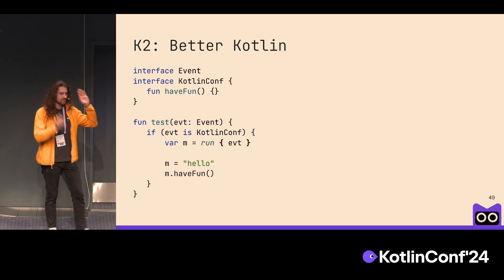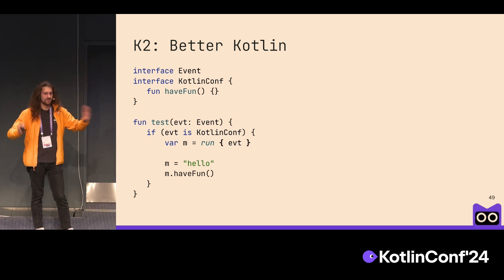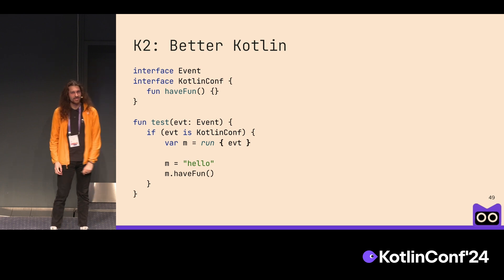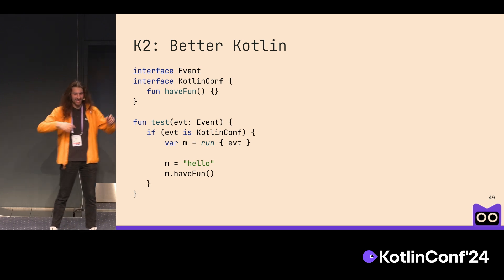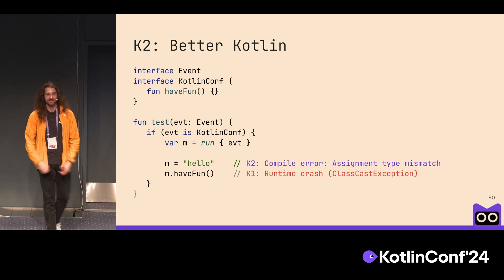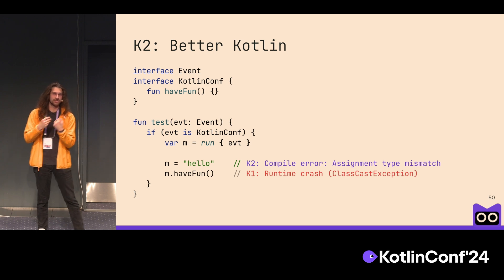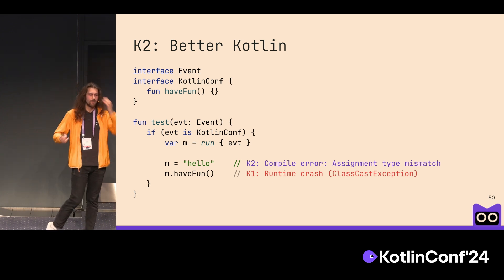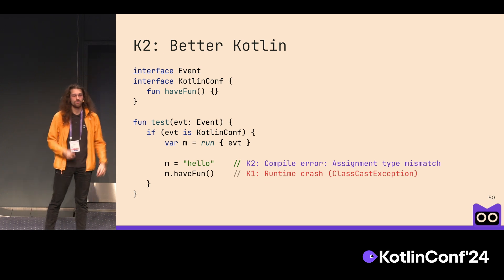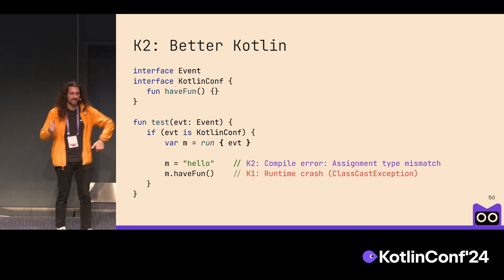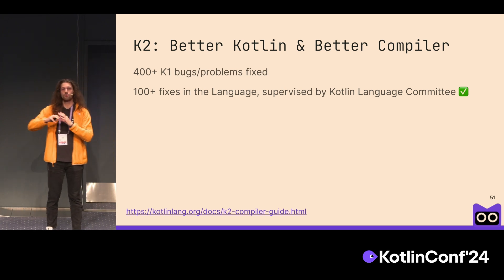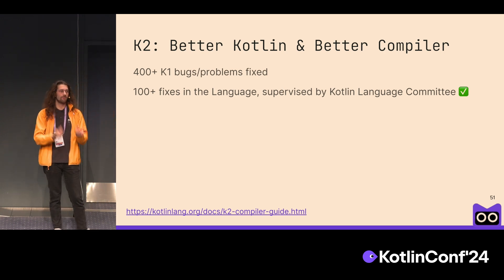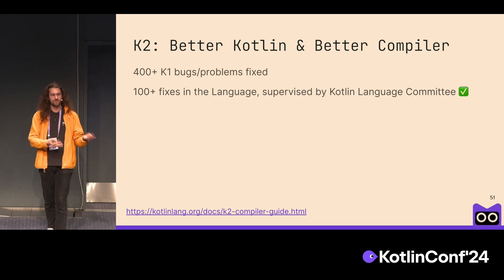A third example: we're doing some type checks, and something strange happens — code that I would not expect to compile actually compiles in K1. But in K2, it is correctly rejected. It's an example of a compiler bug that leads to unsoundness and a runtime crash, but sometimes it worked — that's why it slipped through. We actually fixed it in the language, not in the compiler only. There were a lot of problems fixed just by rethinking our approach and cleaning up corner cases, with huge help from the Kotlin Language Committee that oversees all that effort.